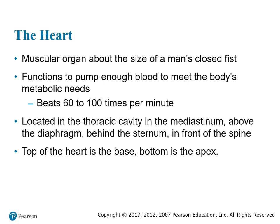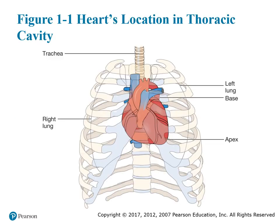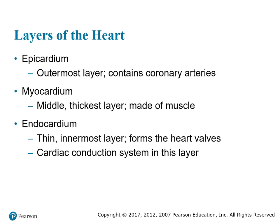The heart is located in front of the spine. The top of the heart is called the base, and the bottom is the apex. A diagram of the thorax shows the left lung, right lung, and the apex of the heart pointing downward.